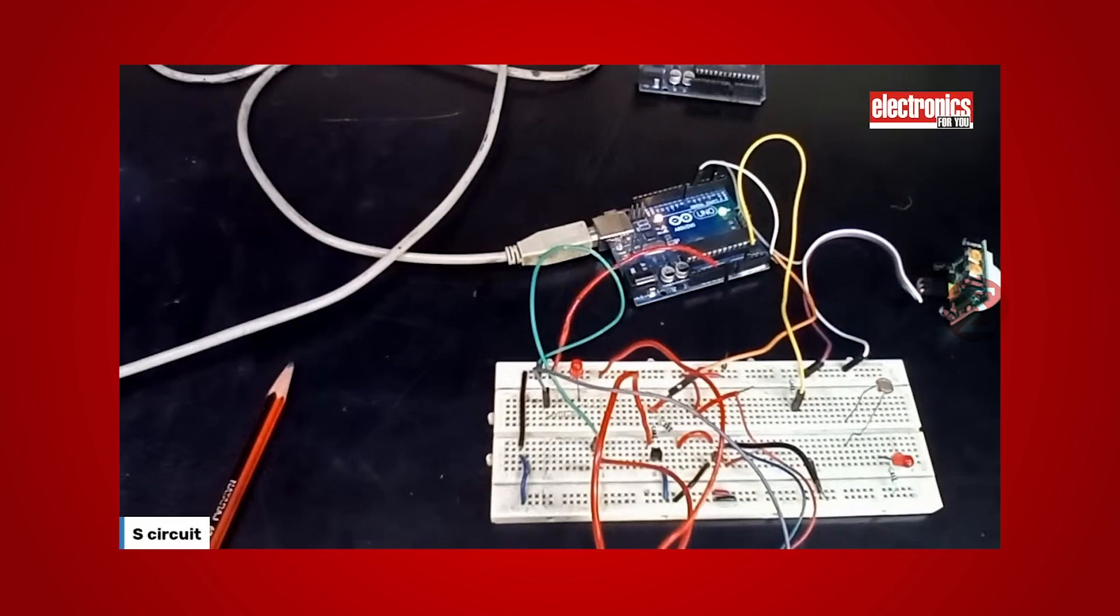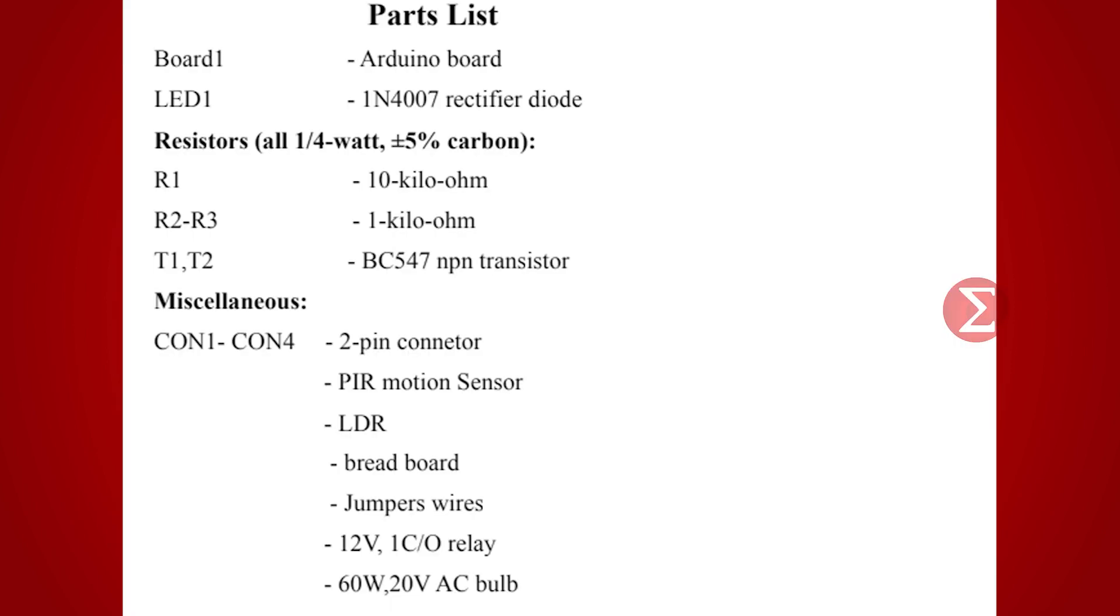This circuit is made up of very few components. Let us take a look at the component list to develop this project. You need to have an Arduino Uno board, a PIR motion sensor, an LDR, a 12V relay, an IN4007 rectifier diode, a 60W 20V AC bulb, two BC547 NPN transistors, some resistors, a few jumper wires and a breadboard.